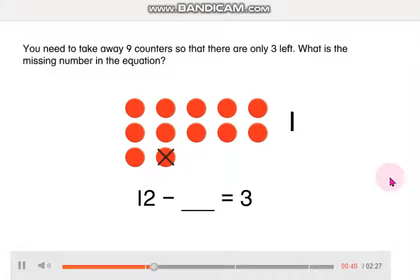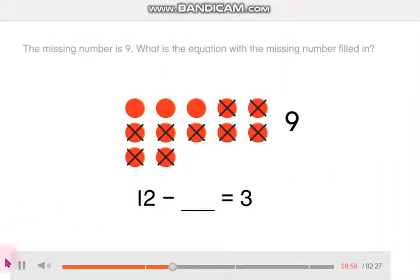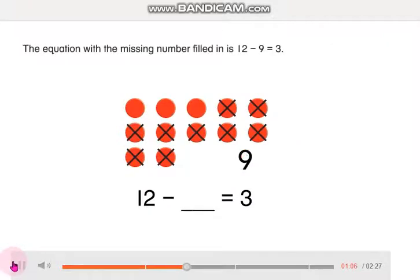You need to take away 9 counters so that there are only 3 left. What is the missing number in the equation? The missing number is 9. What is the equation with the missing number filled in? The equation with the missing number filled in is 12 minus 9 is equal to 3.